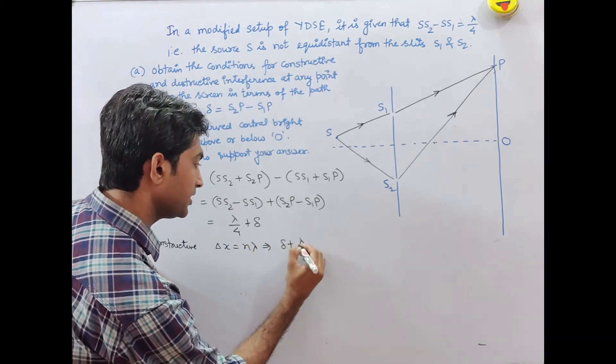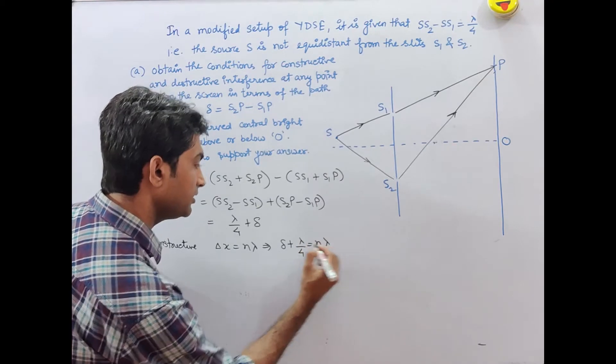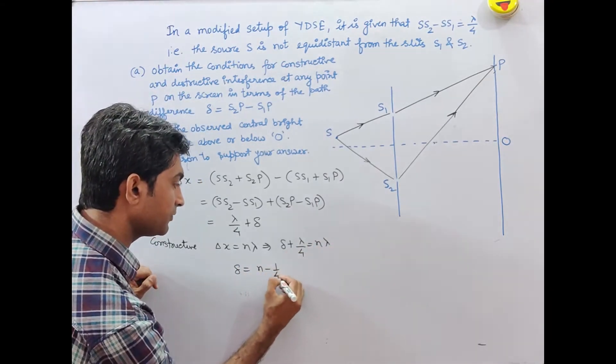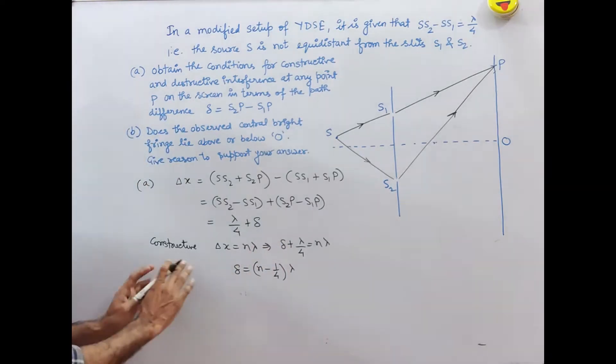Delta plus lambda by 4 equals n lambda. So delta equals (n minus 1/4) lambda. This is the condition for constructive interference.